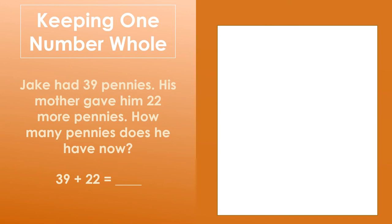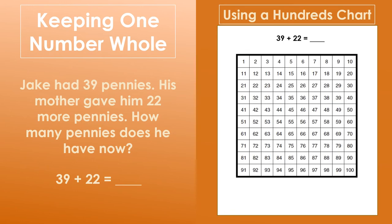Another way we can model the strategy of keeping one number whole is to use a hundreds chart to model our thinking. You can see that we are going to start by shading in the hundreds chart to the number 39, which is the first addend in our equation.